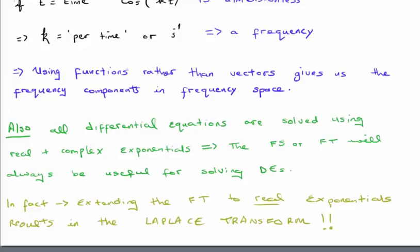Also, all differential equations are solved using real and complex exponentials. The Fourier series and the Fourier transform will always be useful, therefore, in solving differential equations because the basis will be the cosines and sines or the complex exponentials. In fact, if we extend this concept to real exponentials, we get the Laplace transform. So that's the relationship between the Fourier and Laplace transform. Fourier transform only uses complex exponentials. The Laplace transform uses both. And as a result, it uses both of the solutions to differential equations.